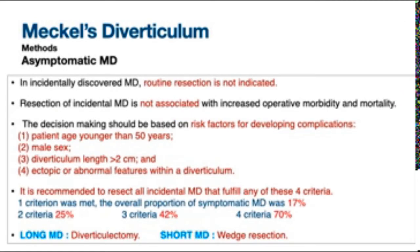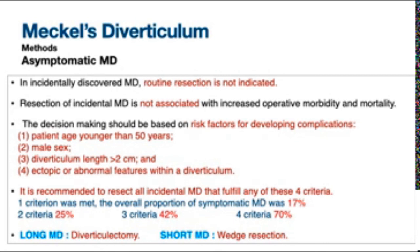For incidentally discovered Meckel's diverticulum, routine resection is not indicated. However, resection itself is not associated with increased morbidity and mortality. Decision making should be based on risk factors: young age under 50, male sex, diverticulum length greater than 2 cm, and presence of ectopic tissue or abnormal features. It is recommended to resect all incidentally discovered diverticula fulfilling any of these four criteria, as there is a higher risk of future complications.